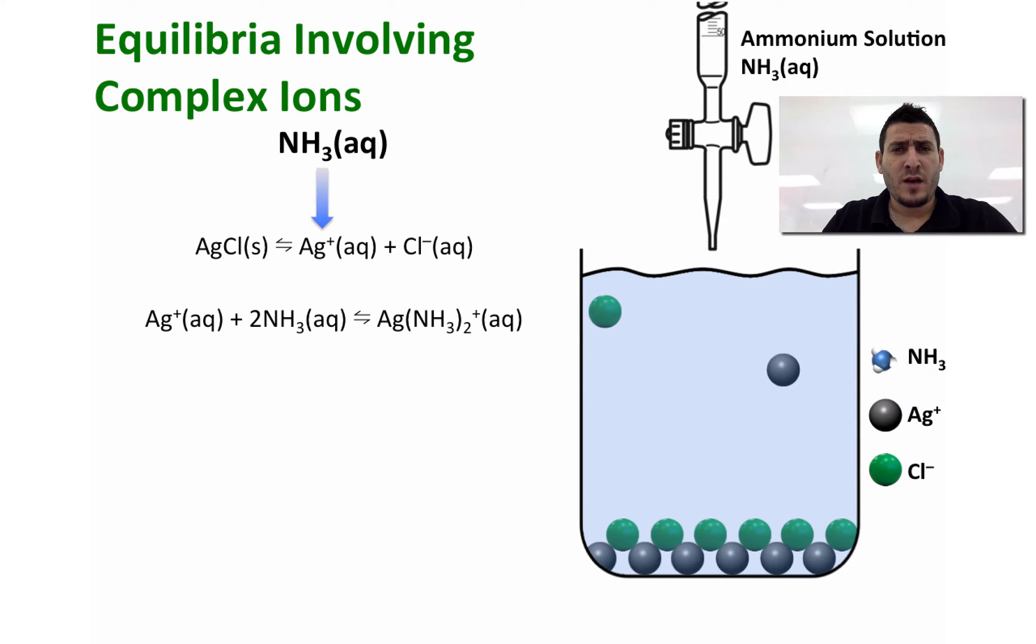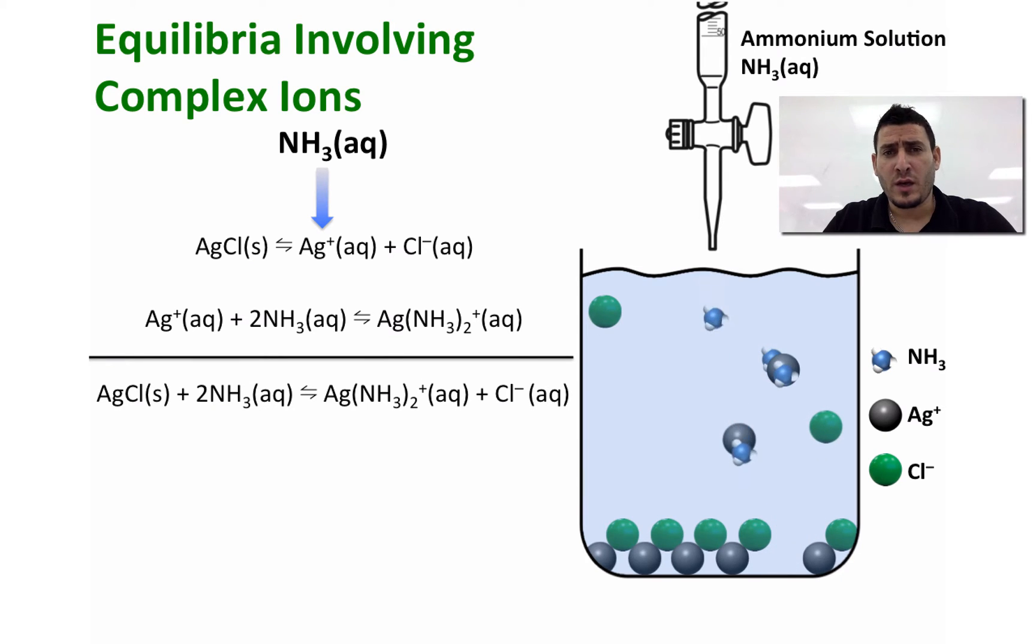Now the overall reaction happening is silver chloride plus ammonia will give the complex ion plus chloride.